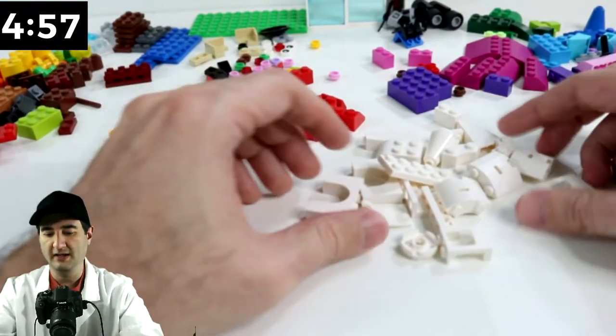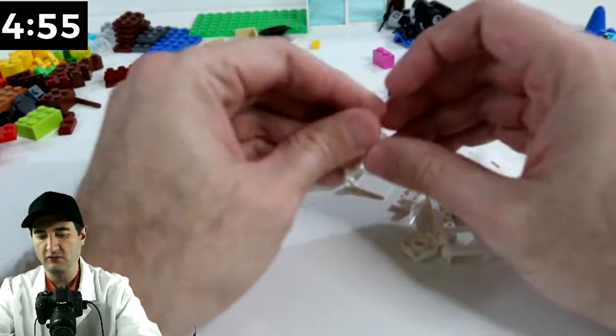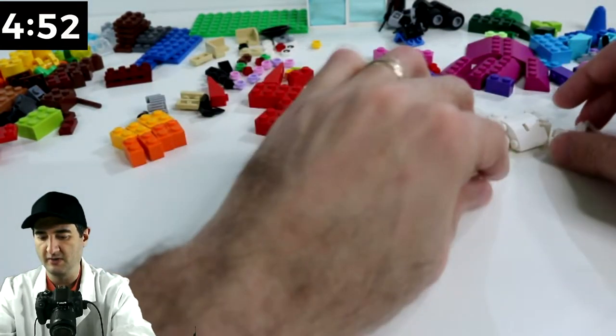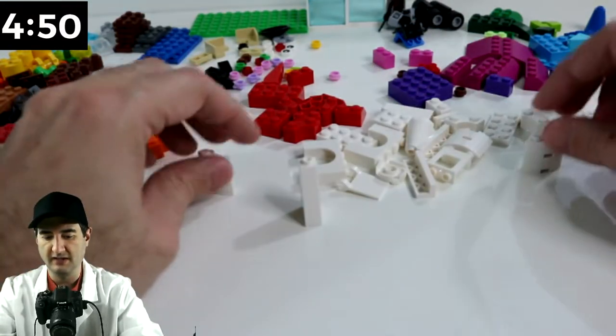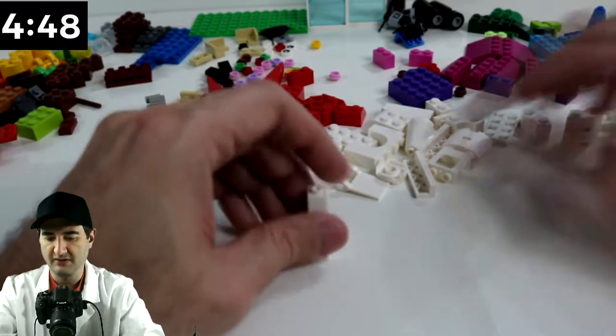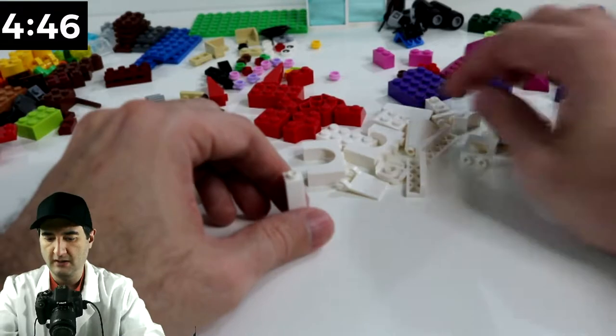So now we got to build a White House. It's got four columns out front and those are the things that I'm most worried about honestly. Everything else we'll figure out, but the columns, that's what I'm most worried about.